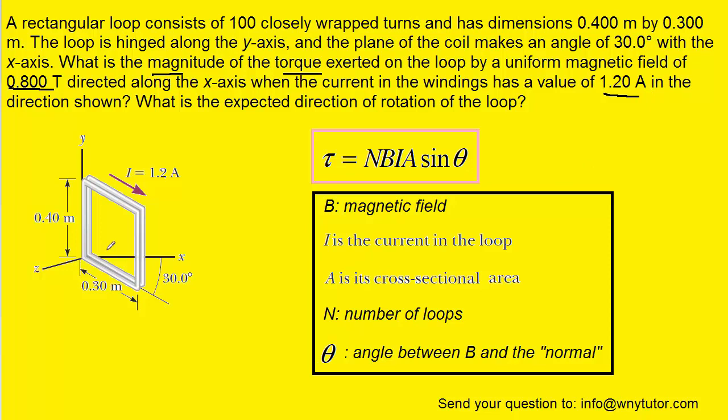A is the cross-sectional area of the loop. If we look at the picture, we can see that the loop is rectangular. So when we calculate the area, all we need to do is calculate the area of this rectangle, which is the length times the width. N is the number of loops and that was stated as being 100.